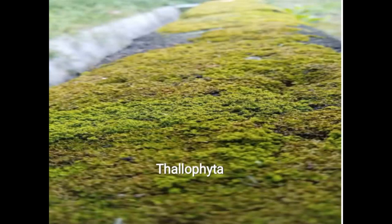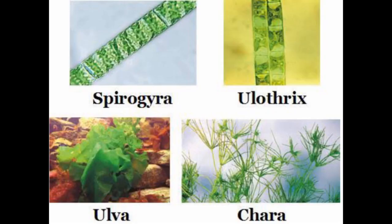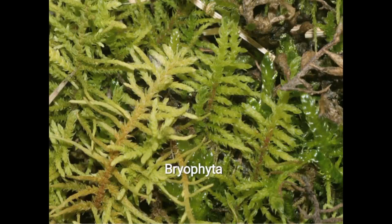Thallophyta plants are known as algae and they are predominantly aquatic. Thallophyta plants do not have well differentiated body designs. Examples of Thallophyta plants are Spirogyra, Ulothrix, Ulva and Chara.